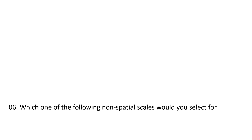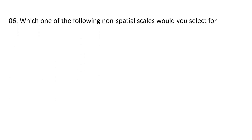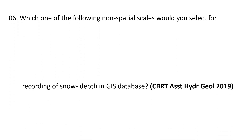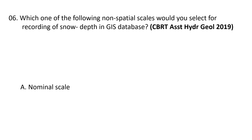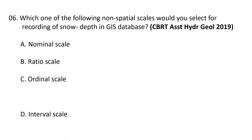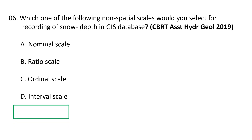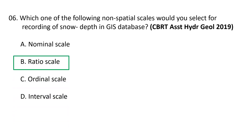Next question: which one of the following non-spatial scales would you select for recording of snow depth in a GIS database? A) Nominal scale, B) Ratio scale, C) Ordinal scale, and D) Interval scale. Generally, ratio scale is the non-spatial scale selected for recording of snow depth in a GIS database. B is the correct option.